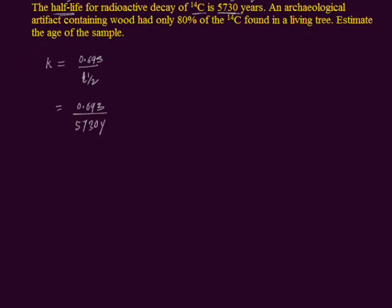You can divide 0.693 by 5730. You will get 0.00012 and it is per year. We mentioned per years.